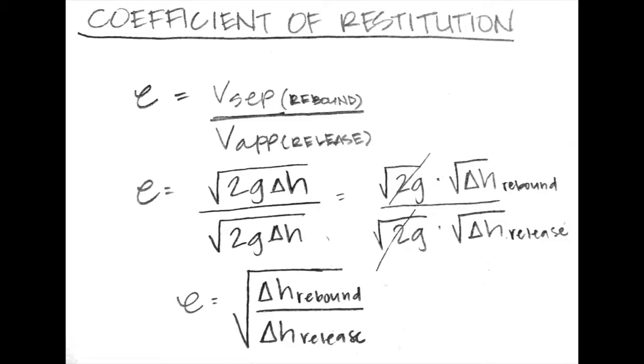The coefficient of restitution equation is given as the velocity of separation over the velocity of approach. By plugging in the velocities derived from the work energy equation and then simplifying, we end up getting that the coefficient of restitution is the square root of the change in height of the rebound over the change in height of the release. This is an accurate approximation of the coefficient of restitution for any vertically dropped object.